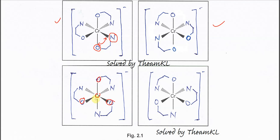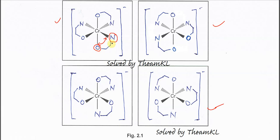Once you switch the donor atoms, draw another mirror image. This gives another pair of stereoisomers. By switching the positions of the oxygens and nitrogens and drawing the mirror image, you get a total of four stereoisomers — this is how you solve this question.